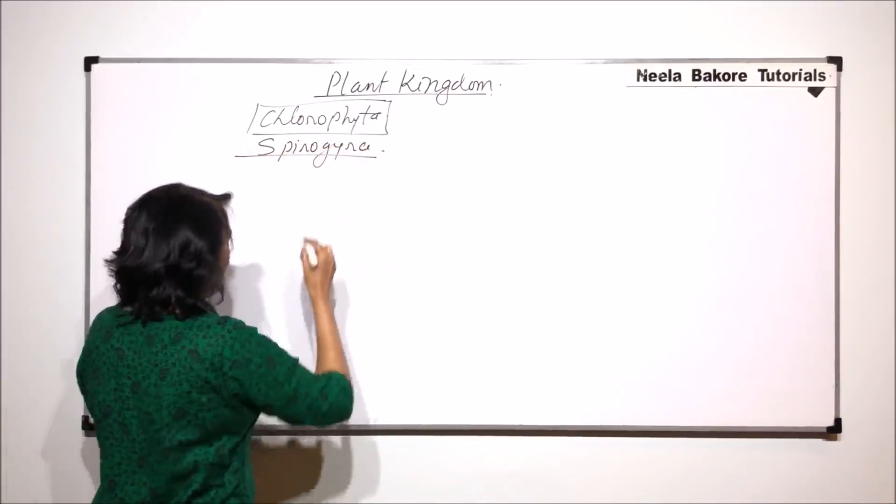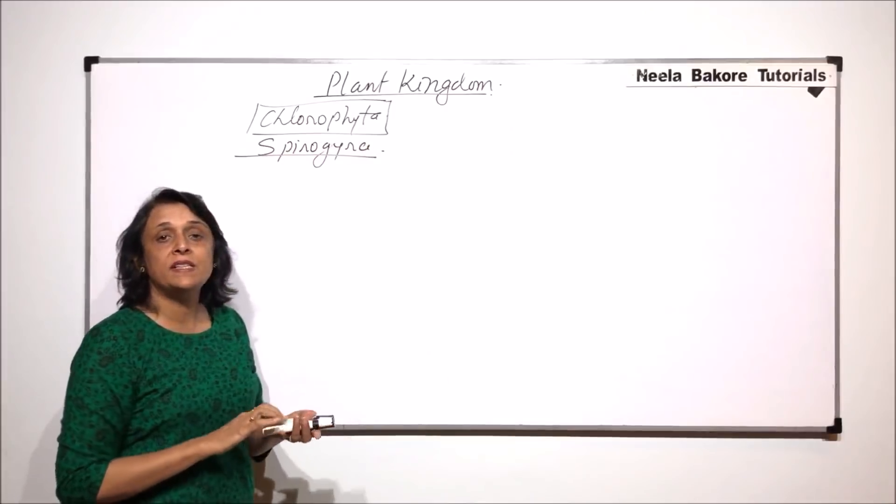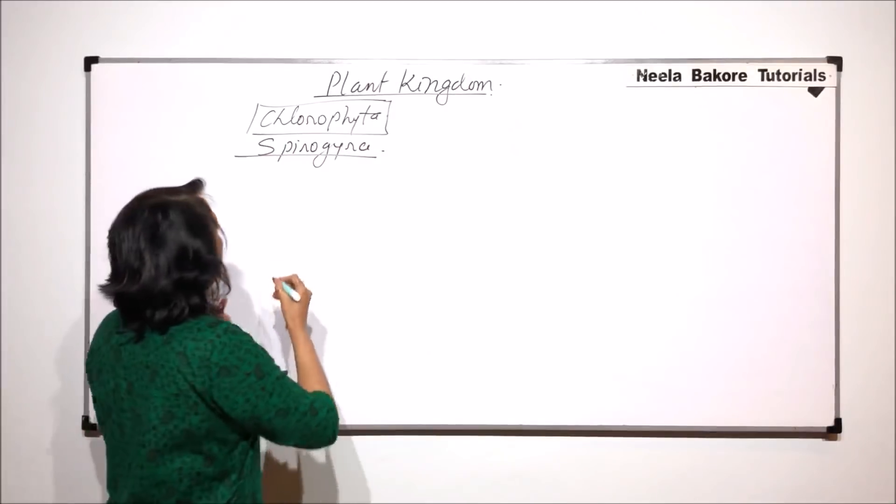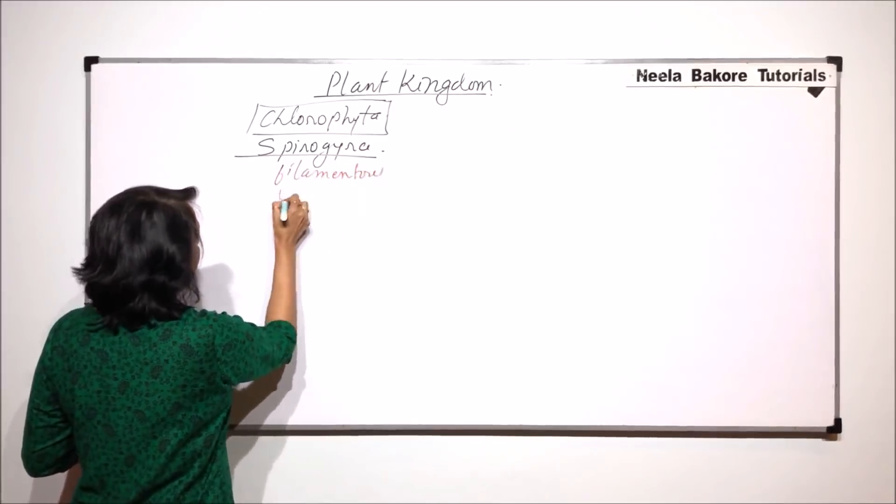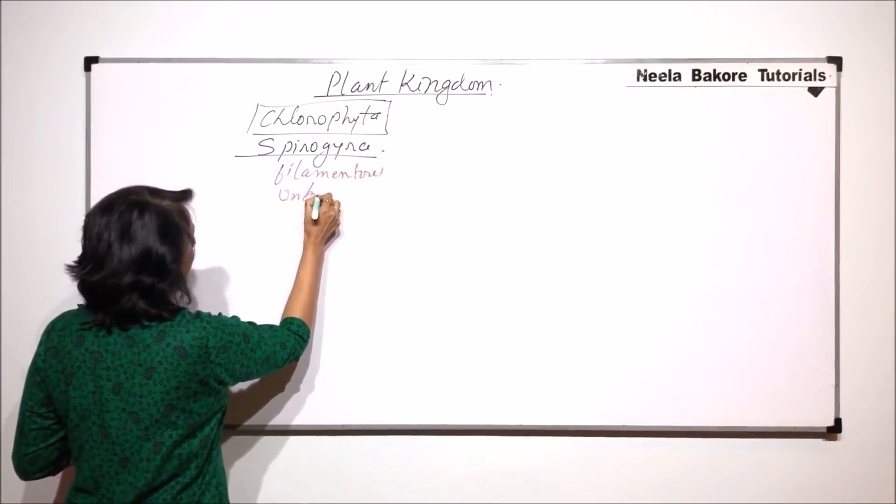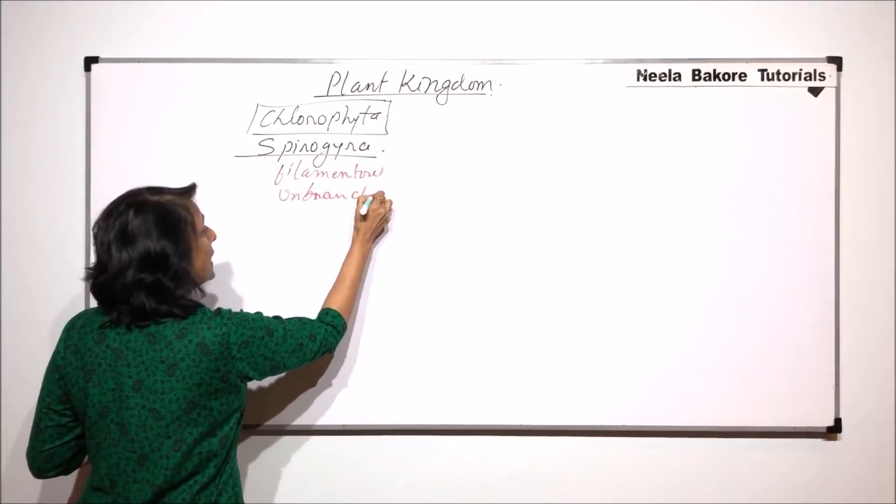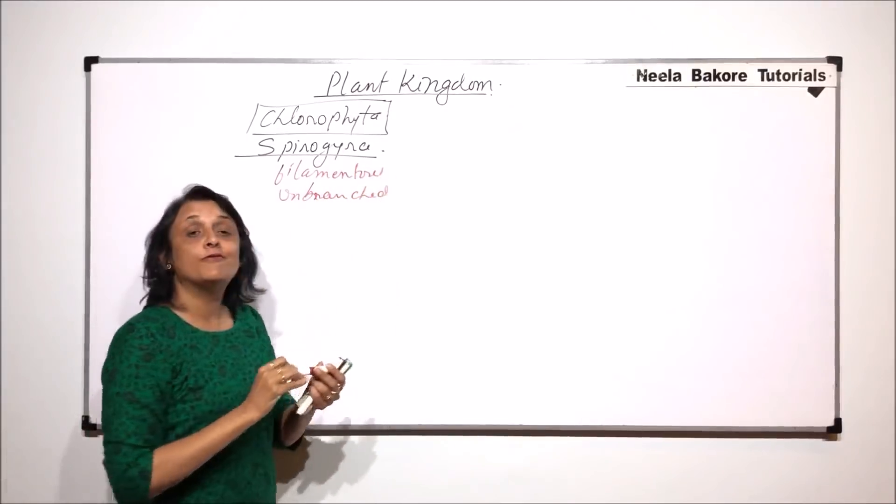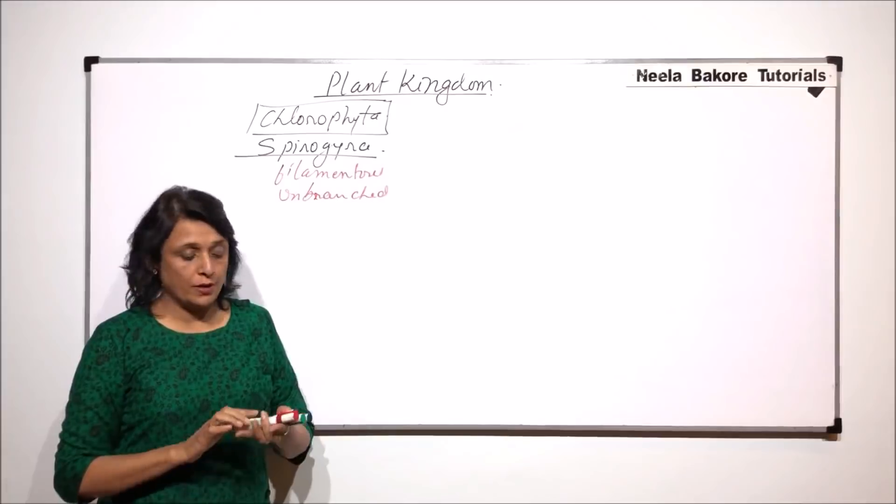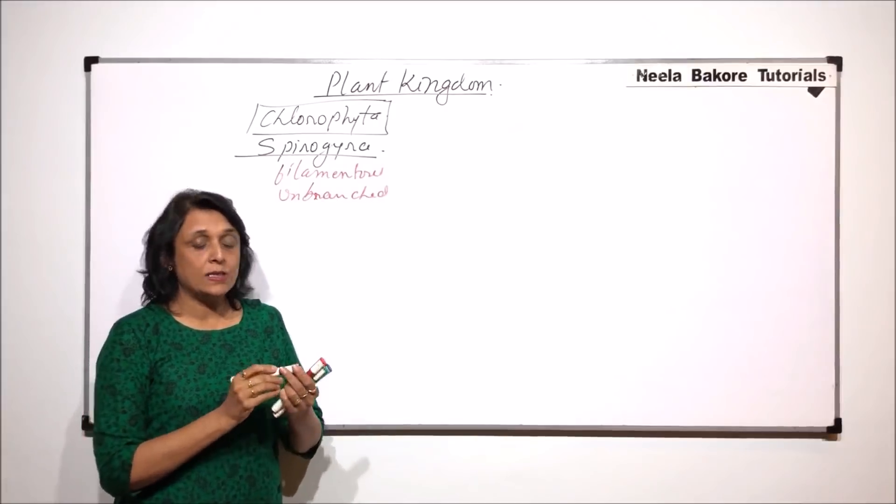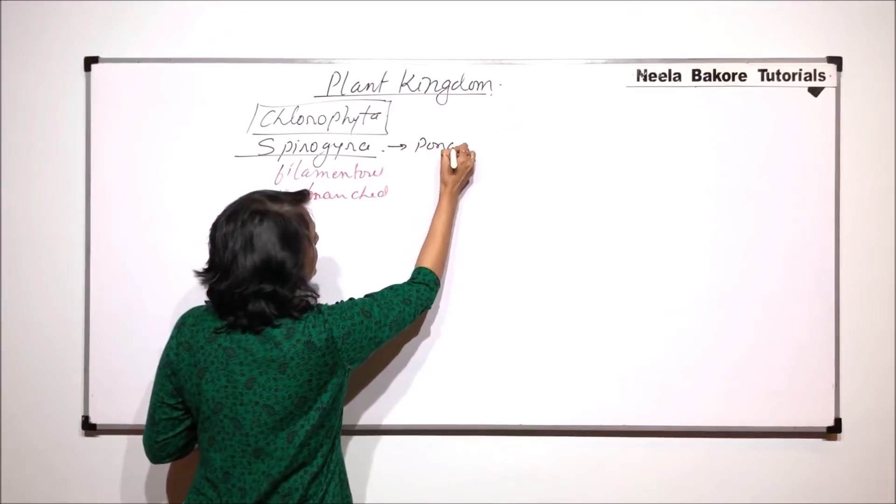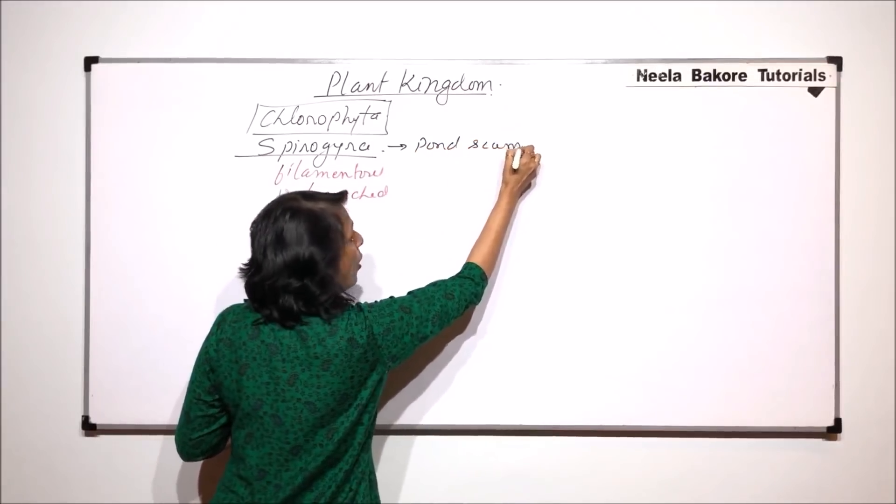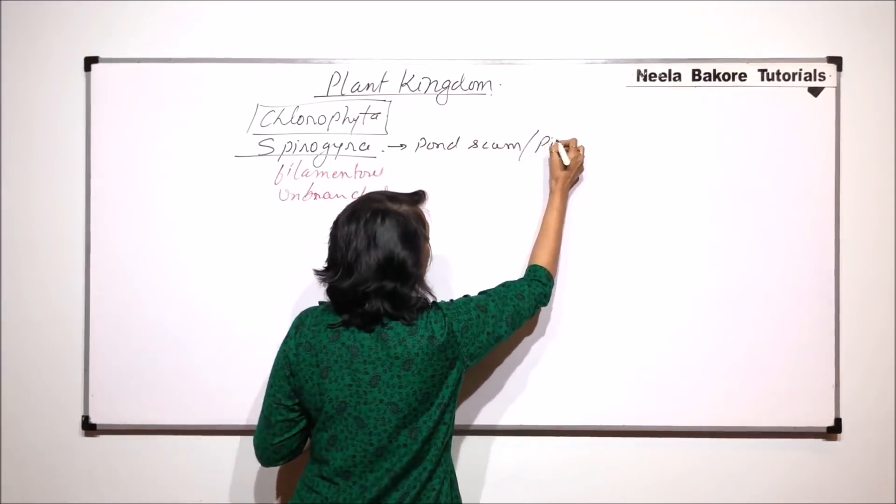Spirogyra is a filamentous unbranched alga. It is normally found in fresh stagnant water and is also known as pond scum or pond silk.